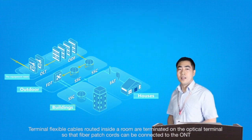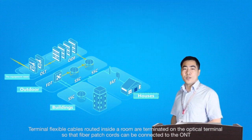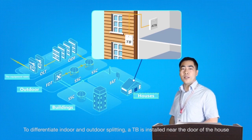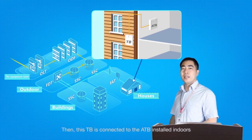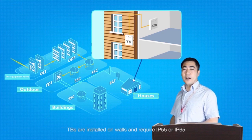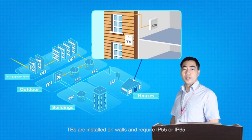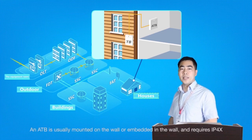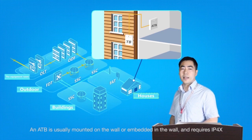Terminal flexible cables routed inside a room are terminated on the optical terminal so that fiber patch cords can be connected to the ONT. To differentiate indoor and outdoor splitting, a TAB is installed near the door of the house, and this TAB is connected to the ATB installed indoors. TABs are installed on walls and require IP55 or IP65. An ATB is usually mounted on the wall or embedded in the wall and requires IP4X.